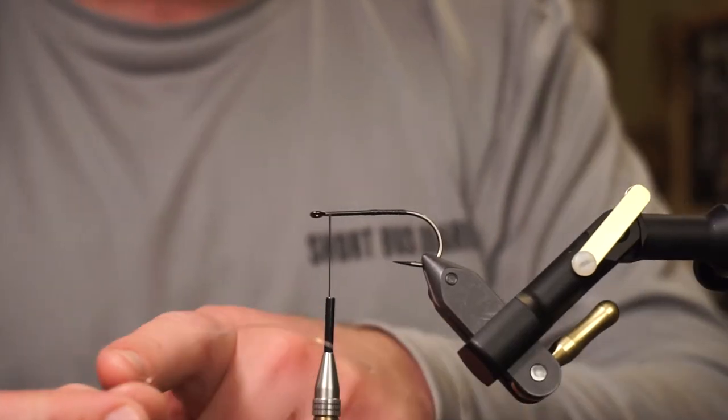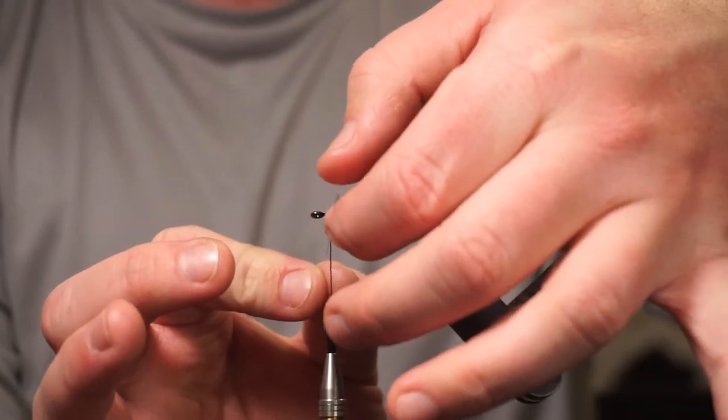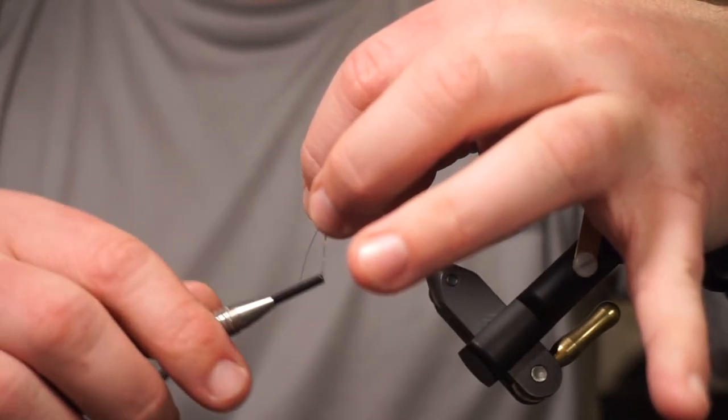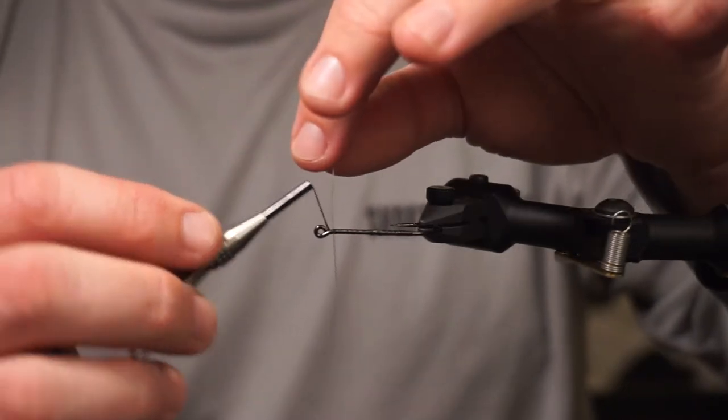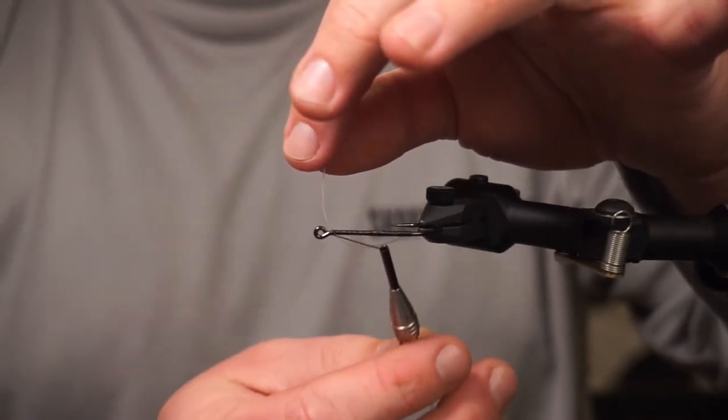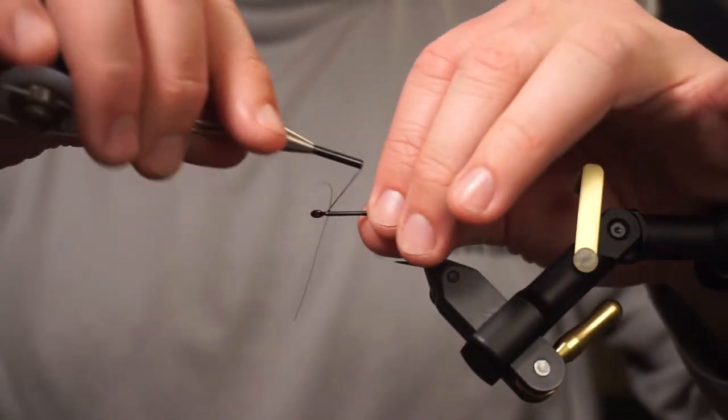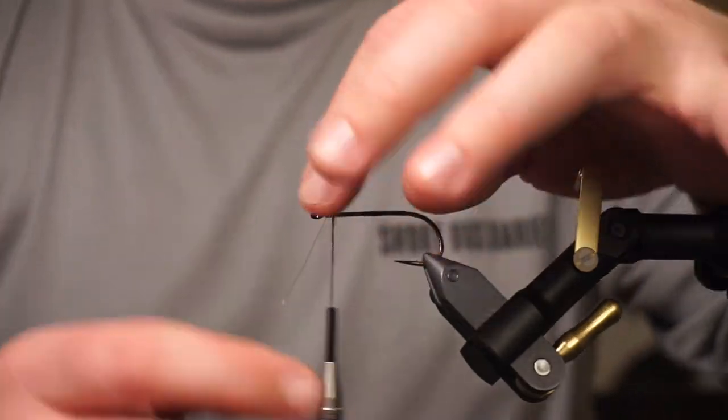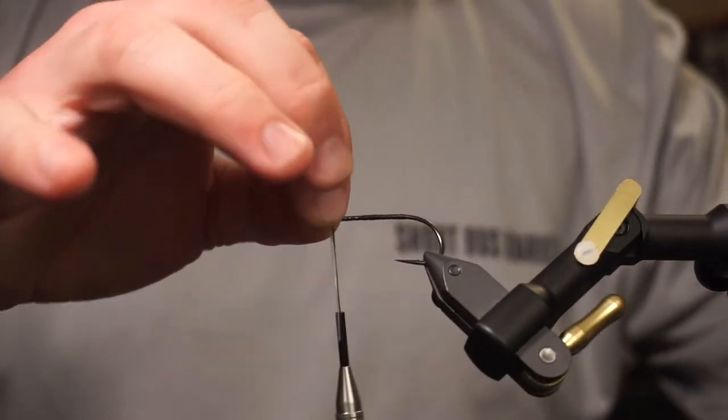As it comes off the spool it's going to have a little bit of a bend in it, so you want to make sure that bend is placed where it's pointed downward on the fly. I've got my thread just behind the eye of the hook, and we're going to make a couple of cross wraps. We're just going to wrap over in an X pattern right on top of the hook.